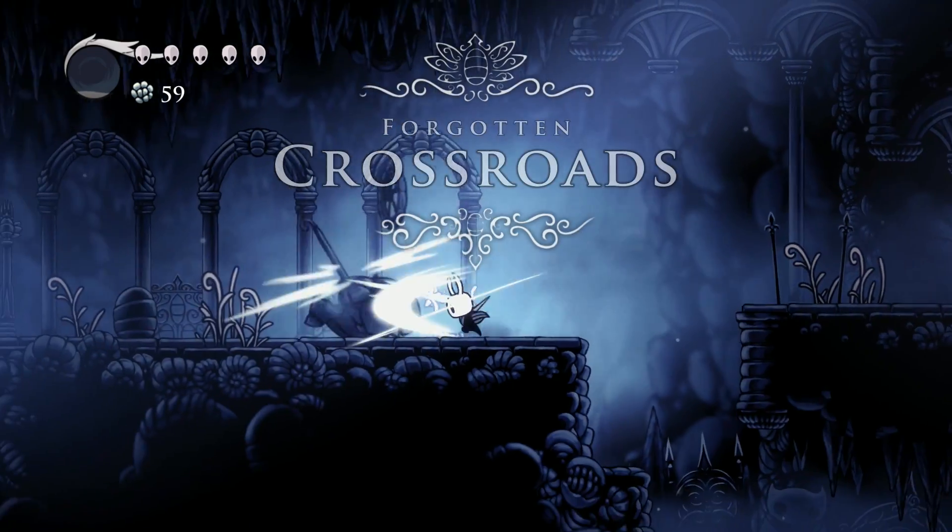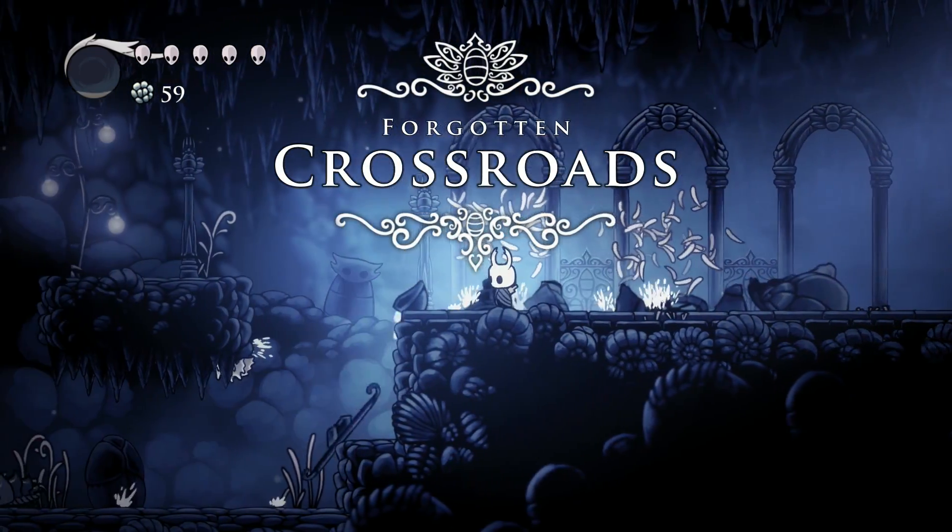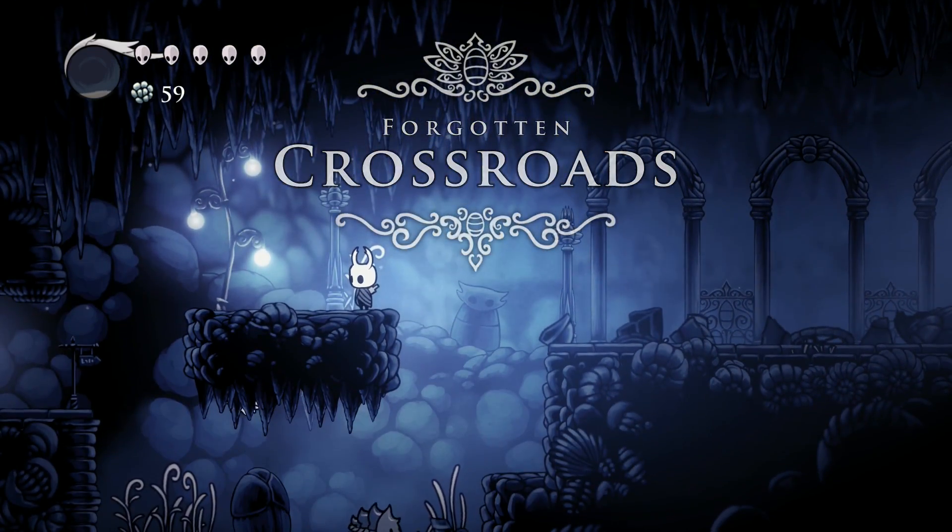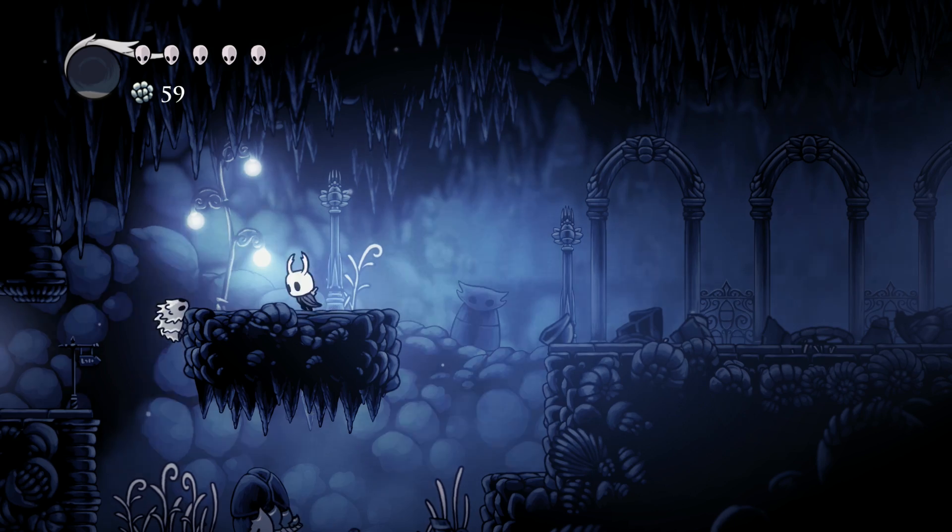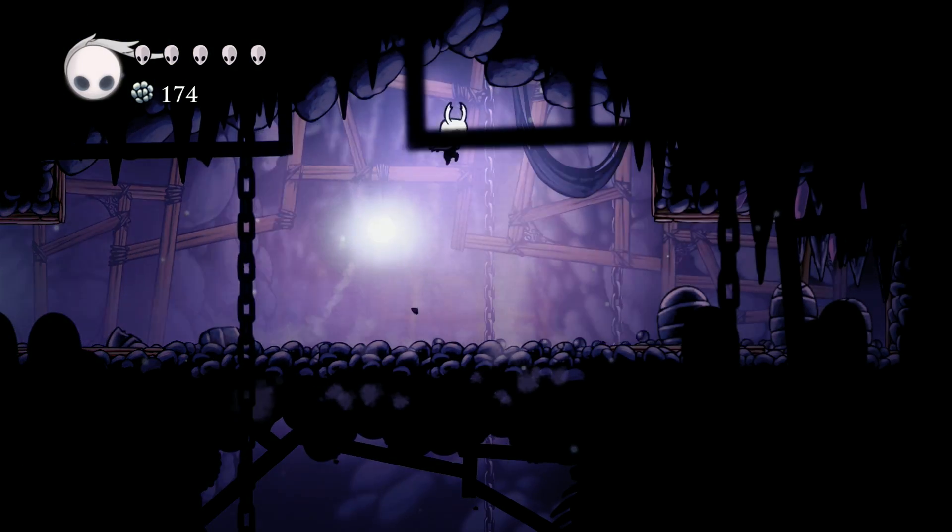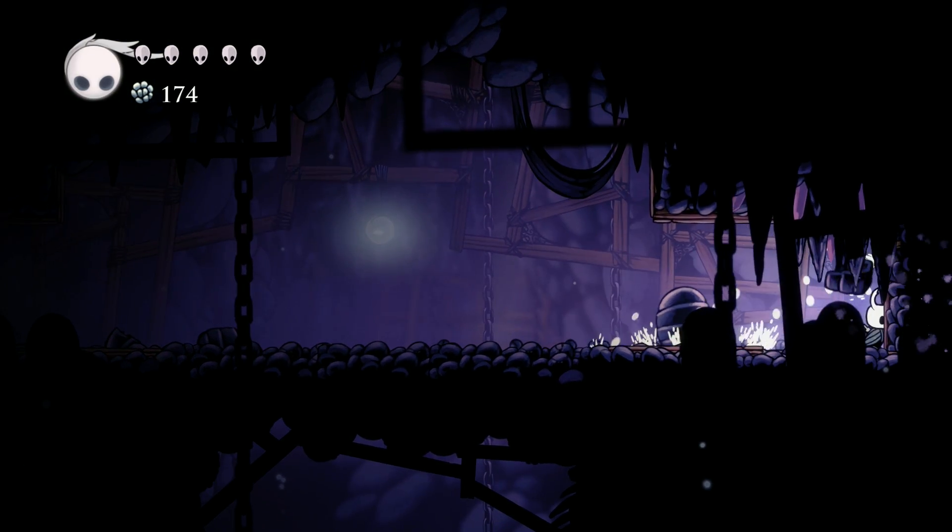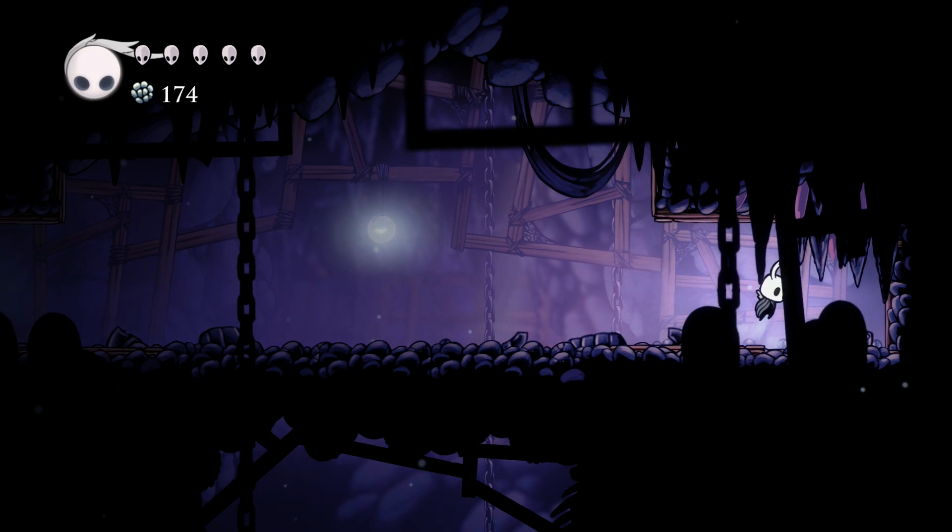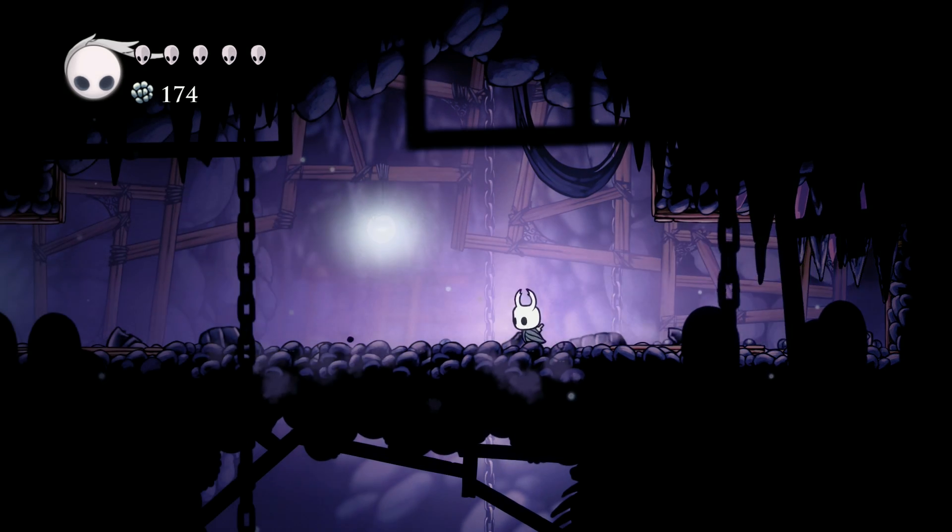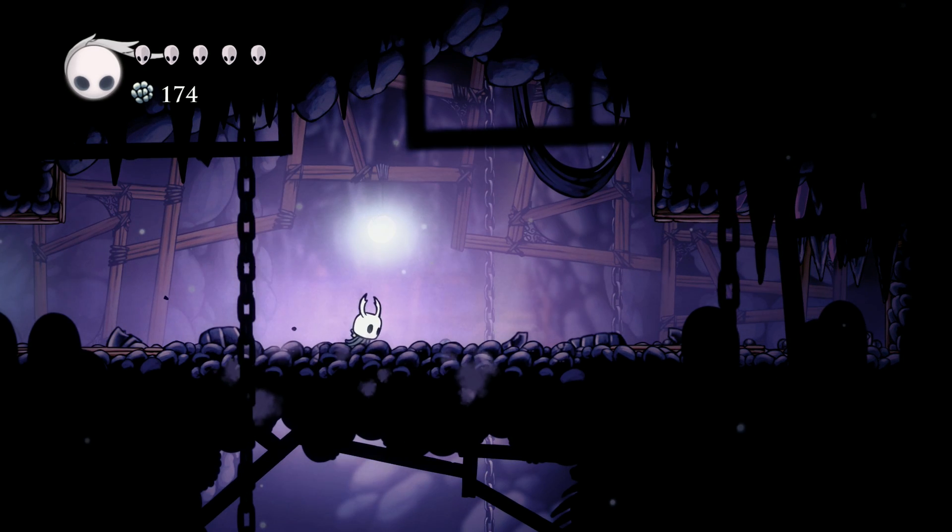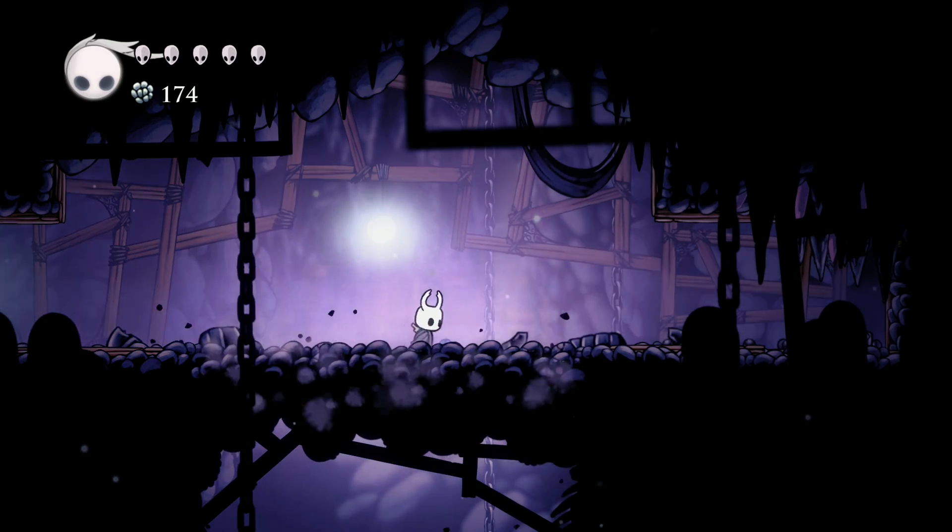Nowhere is this made more clear than the starting area, Forgotten Crossroads. You'll find many possible paths in all directions blocked with no obvious way to proceed. It's only as you progress in the game and unlock new abilities that these pathways become accessible to you. And that's just considering the main required route to beat the game. There are many optional rooms, areas, secrets that you might never even see in your playthrough.